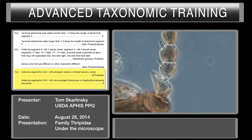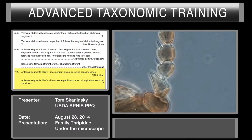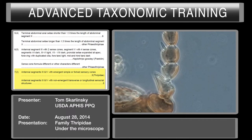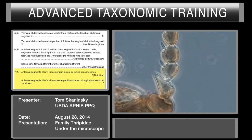Now occasionally you can get forked sense cones where the angle of those forked sense cones coincides with the angle of the antennal segment, and it'll appear that it's a simple sense cone. Because as you go into lower taxa, we're going to divide up groups that have simple sense cones from groups that have forked sense cones.